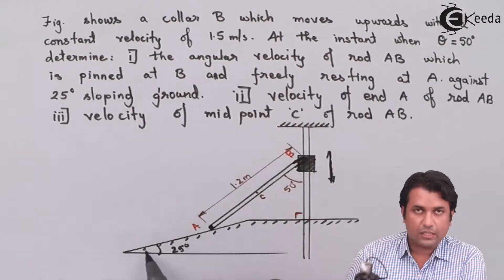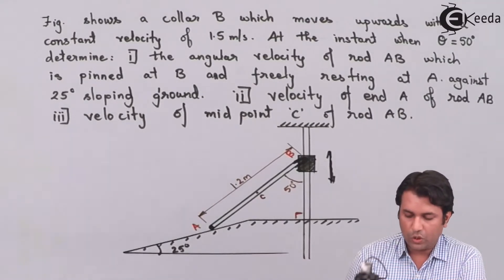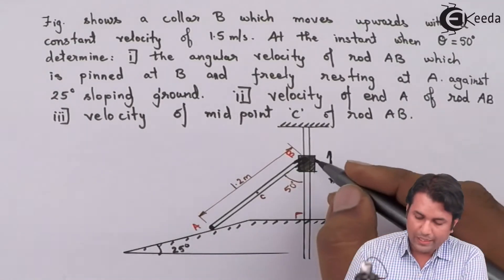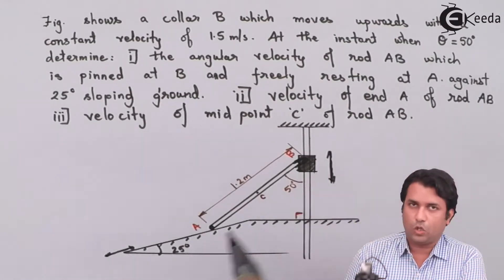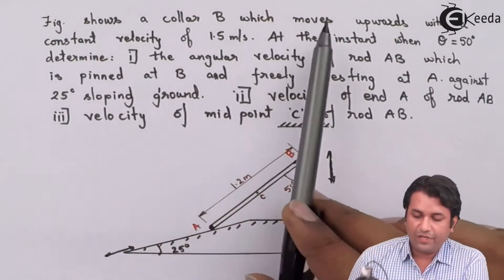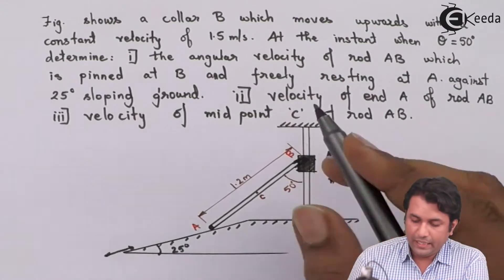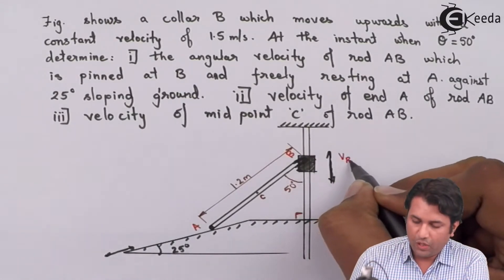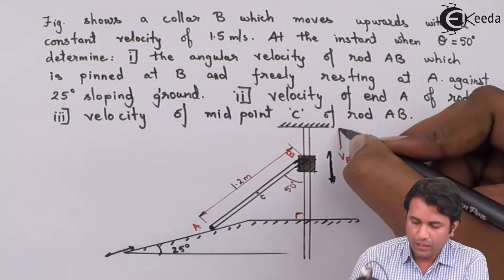The inclined surface is inclined at an angle of 25 degrees with respect to the horizontal. Because of that, point A either goes down or moves up along the plane depending on the movement of the collar. The problem states that collar B moves upwards with a constant velocity of 1.5 meters per second.